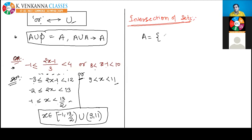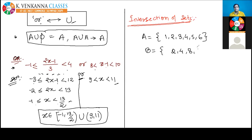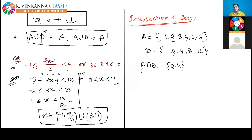For example, let A = {1, 2, 3, 4, 5, 6} and B = {2, 4, 8, 16}. A intersection B means those elements present in both sets. The elements 2 and 4 are present in both sets, so our answer is {2, 4}. These are the common elements — this is A ∩ B.